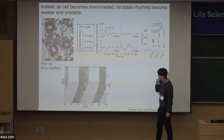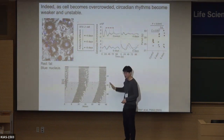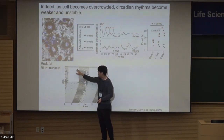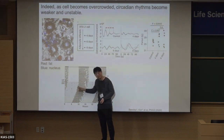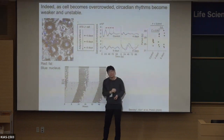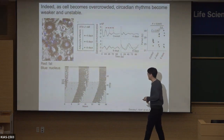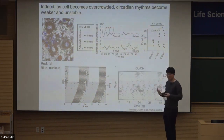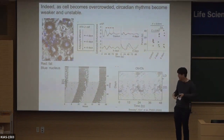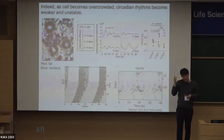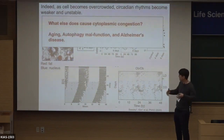Here is a key experiment. In normal mice, you can see they sleep and wake up in a very regular pattern — even in complete darkness, they maintain a beautiful sleep-wake cycle. But in obesity mice, where the cell is more crowded with fat, there is no more regular sleep-wake cycle.